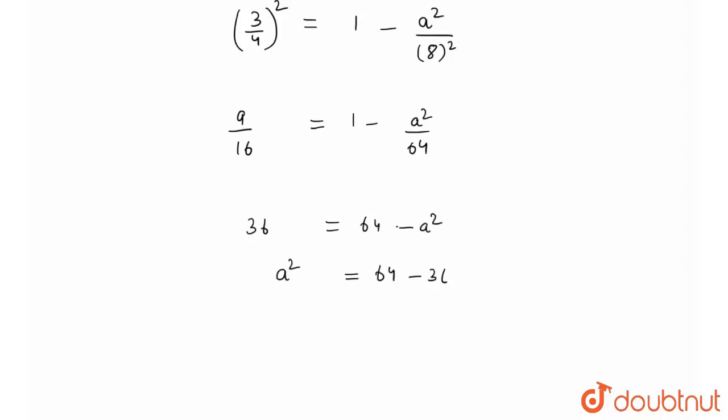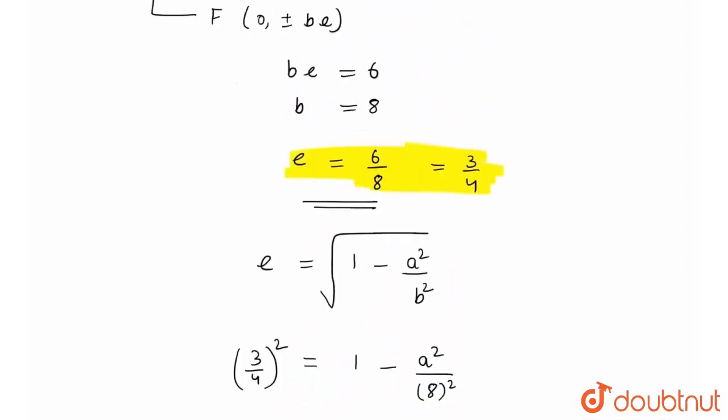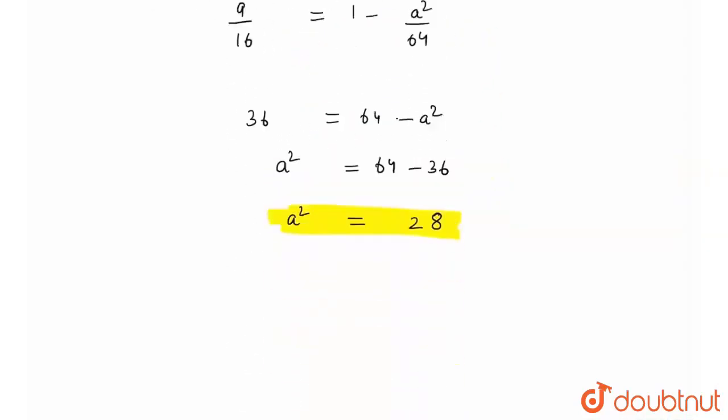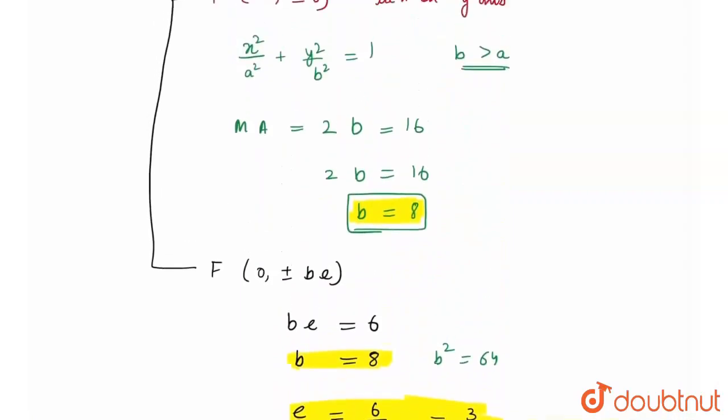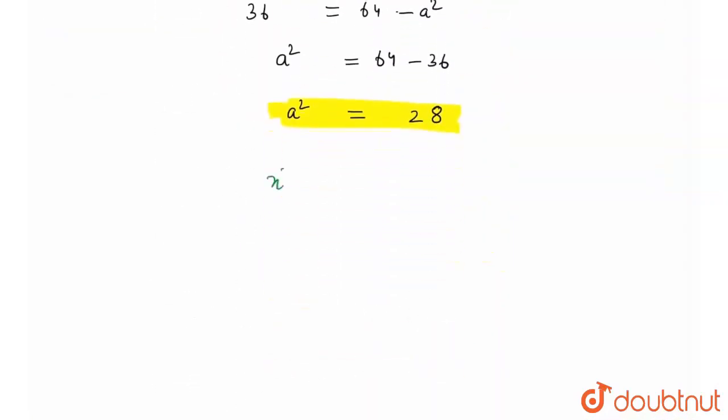And I have the value of b = 8, or I can say I have the value of b² = 64. Therefore the equation of my ellipse would be x²/28 + y²/64 = 1. Therefore this is the equation of the required ellipse.